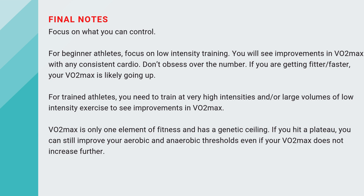For trained athletes, you will need to train at very high intensities or very large volumes of low-intensity training to see continual improvements in your VO2max. VO2max is only one element of fitness, and it also has a genetic ceiling. So if you've been training year after year at high intensities and doing lots of intervals, you will eventually hit a ceiling. If you do hit a plateau, that doesn't mean your performance can't keep improving — you can still improve your aerobic threshold, your anaerobic threshold, your movement efficiency, and you will still have better performances even if your VO2max does not go up. It is only one element of your fitness.